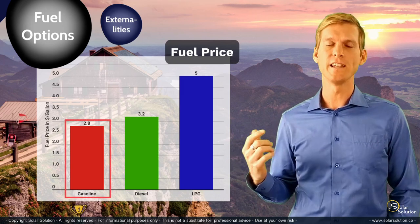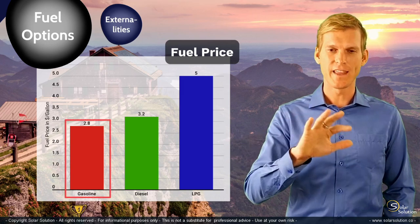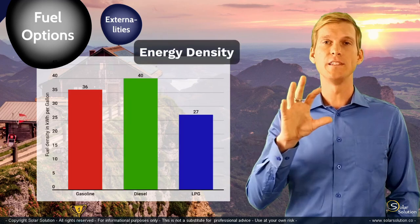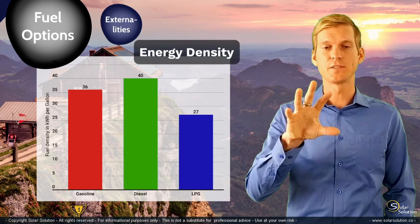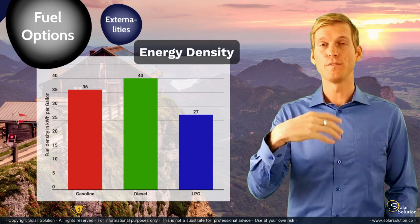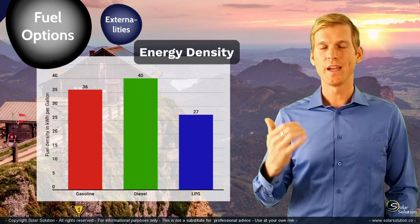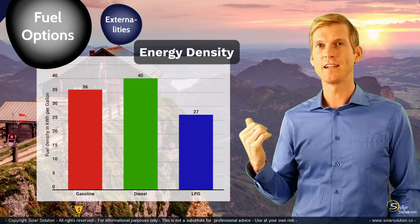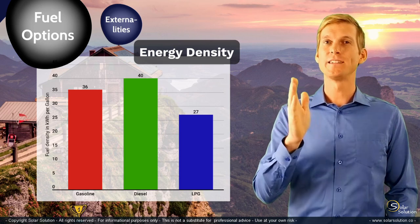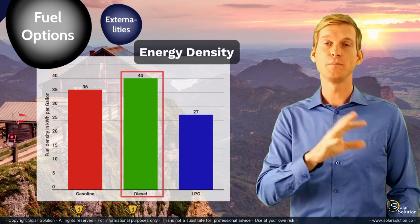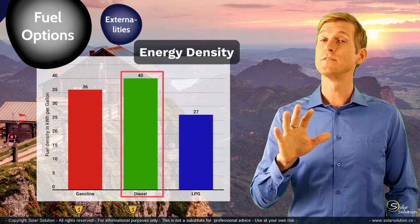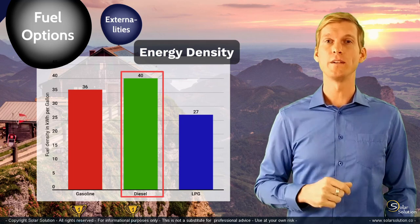But if you look at the energy density, the situation shifts a little bit. In this graph the energy density is expressed as the amount of kilowatt hours per volume per gallon of fuel. And you can see here clearly — maybe not surprisingly — that diesel has the highest energy density per gallon. So by means of energy density, diesel is the clear winner.